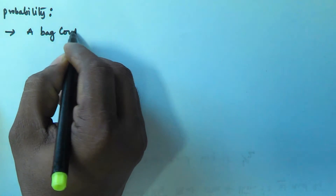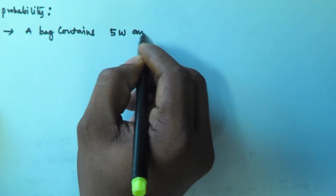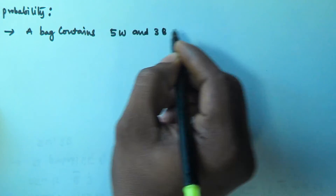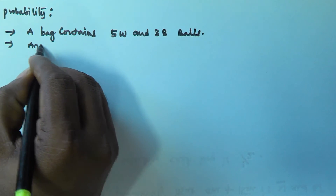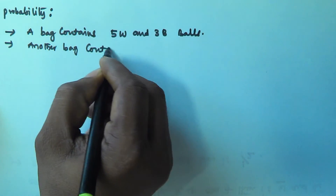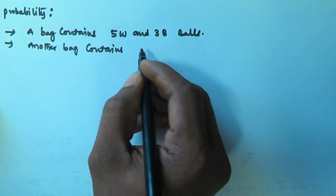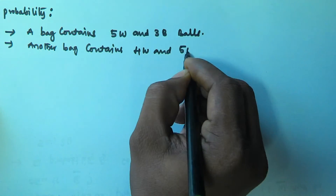Hello friends! In this video, we will see another problem related to probability. The problem is: a bag contains 5 white balls and 3 black balls. And another bag contains 4 white balls and 5 black balls.